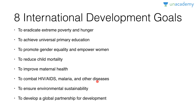Six means sticks — to combat HIV/AIDS, malaria, and other diseases. These diseases have left people crippled so they walk using sticks. Seven is heaven — a beautiful environment where everything is green, organic, and runs on renewable energies like solar. Seven means heaven, heaven means environmental sustainability. Eight is gate — to develop a global partnership for development. Earlier all nations used to close their gates on each other, but now they've opened up and started developing cooperation.